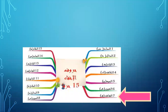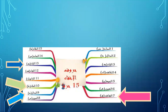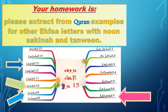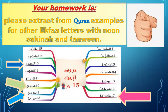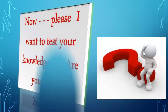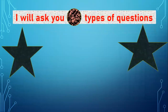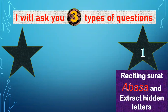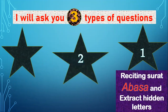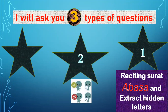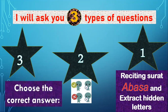Today we practiced four letters from the 15 letters: Qaf, Dal, Ta, and Ta. Your homework is to extract from the Qur'an examples for other letters with Nun Sakinah and Tanween. Now I want to test your knowledge. Are you ready? I will ask you three types of questions: number one, reciting Surat Abasa and extracting hidden letters; number two, true or false; number three, choose the correct answer.